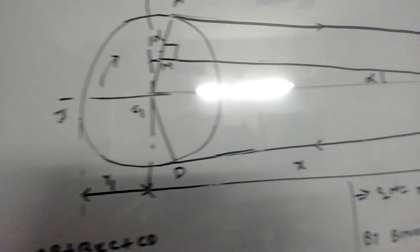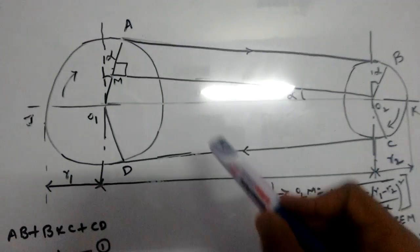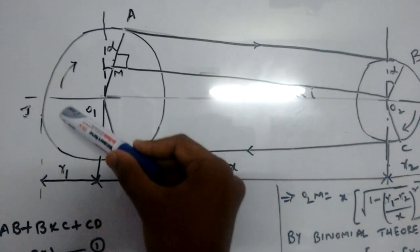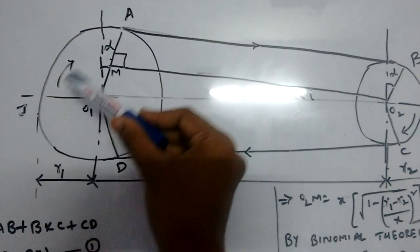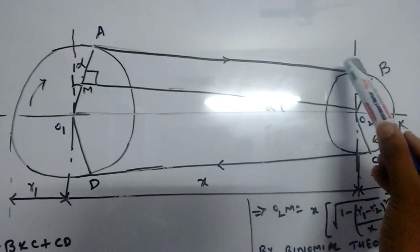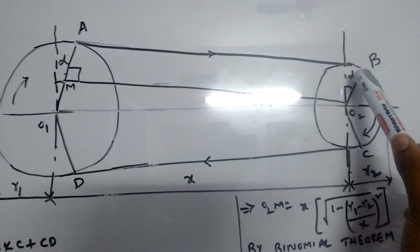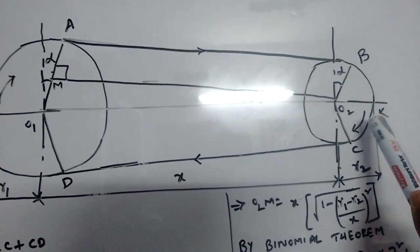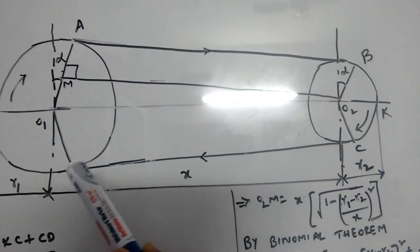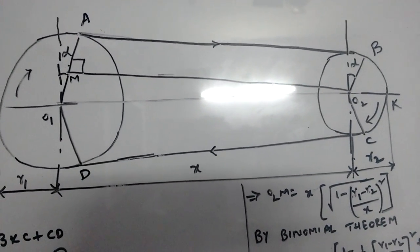We are going to find out the length of this open belt drive. The total length is DJA plus AB plus BKC plus CD. From the figure, the configuration is symmetric in nature.